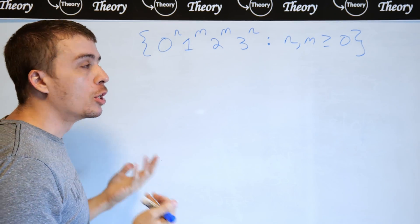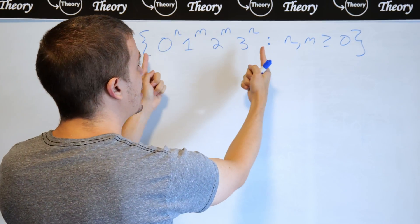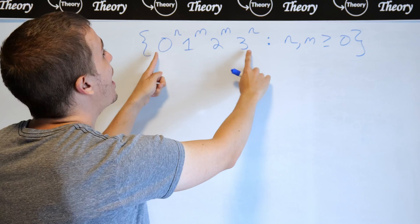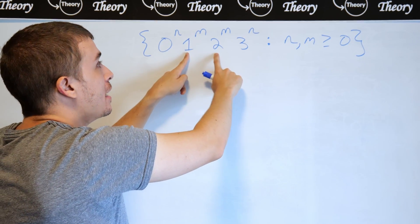So one thing that you could do is to look at this grammar from the inside out because it's somewhat looking in that particular way because the n's are on the outside and the inner counts are over here.